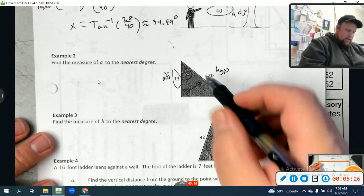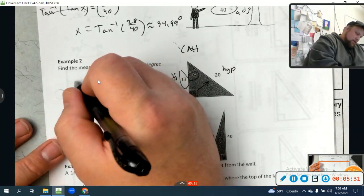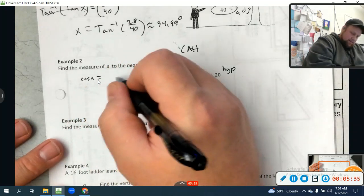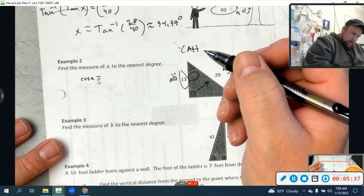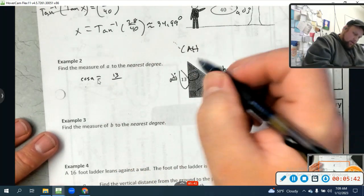So I have adjacent hypotenuse. That's the co. That's the cosine. So I know that cosine of A equals, adjacent over hypotenuse. So 13 over 20.